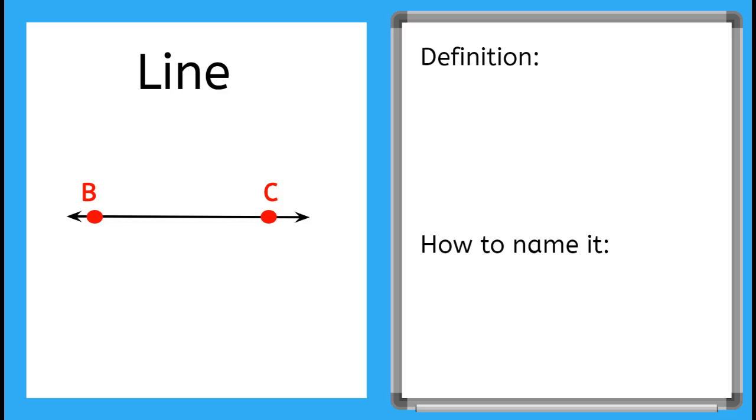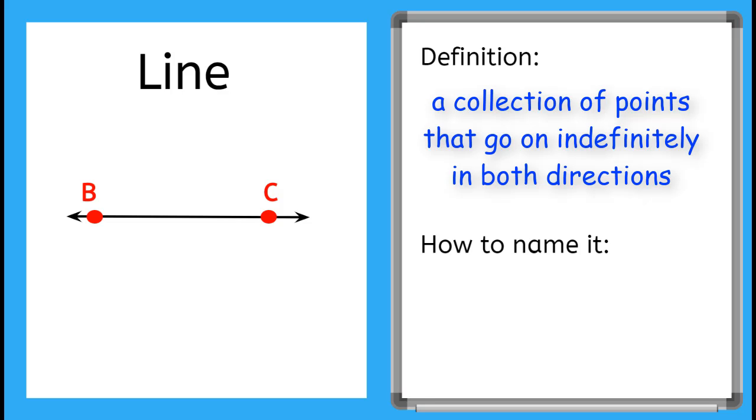Now this is a line. While this line looks like a straight line, it's really made up of an infinite number of points, a whole collection that go on indefinitely or forever in both directions. We know this because of the arrows on either end. Notice that two of the points on the line have been named, point B and point C. To name the line, we will use the letters for the points with a symbol above them, and the symbol is a line.